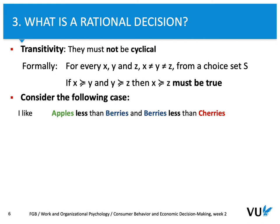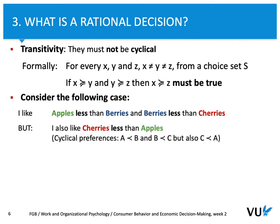We can consider the following case. I can say that I like apples less than berries and berries less than cherries. On the other hand, I can also say, due to my preferences, that I like cherries less than apples. The problem with this example is that it's a cyclical preference — A is less preferred than B, B is less preferred than C, but also at the same time C is less preferred than A. If that were a rational preference and rational decision-making, this should not be cyclical. Cherries should be the most preferred.